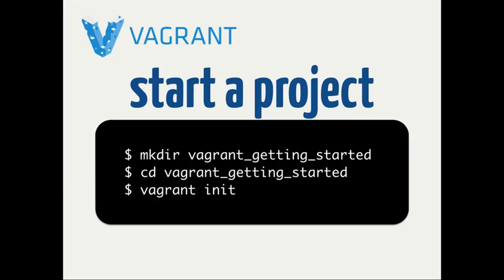Starting a project is pretty easy. You can go into an existing project directory or make your own and start from scratch — all you have to do is run 'vagrant init.' It will generate a Vagrantfile with a bunch of pre-configured comments and variable names to fill out, giving you a lot of the boilerplate already. If you know the name of the box you want to use, you can provide it and it'll already pre-configure the Vagrantfile to spin up that box.